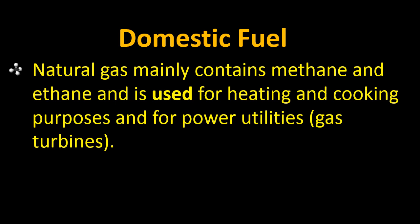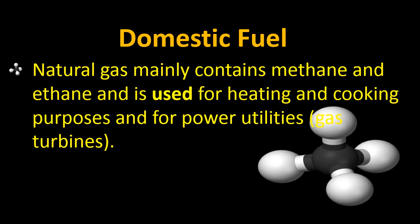Alkanes are the major part of domestic fuel and household fuel. Natural gas mainly contains methane and ethane. This natural gas is a hydrocarbon gas mixture, also known as fossil gas, consisting of methane, ethane and higher alkanes. Sometimes a small percentage of carbon dioxide, nitrogen, hydrogen sulfide and helium is also present, but mainly it consists of 85% methane. We use this for heating and cooking purposes and for power utilities like running gas turbines, making alkanes a major part of our household fuel.